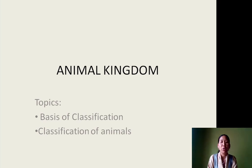Welcome to Class 11 Biology. Today we shall start the fourth chapter of the textbook, that is Animal Kingdom. The topics we are going to discuss are the basis of classification and classification of animals. As you all know, Earth is rich in biodiversity. There is diversity of living organisms, and it becomes very important to study each of them so that we can benefit and also live in harmony with nature.